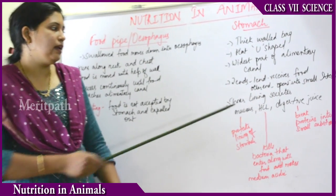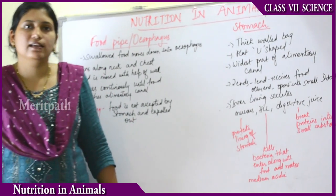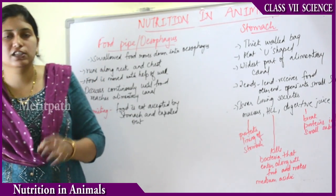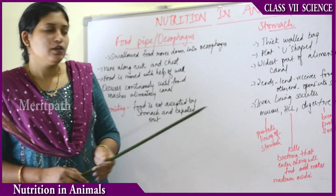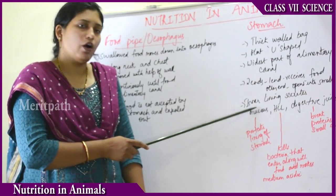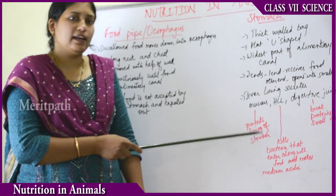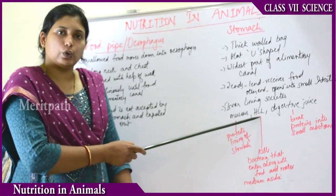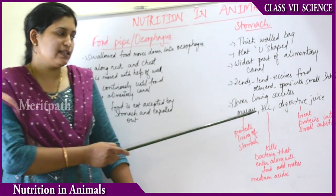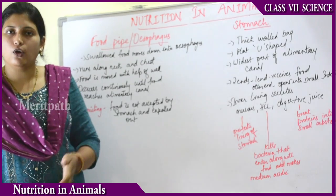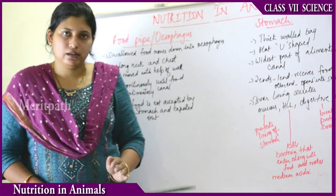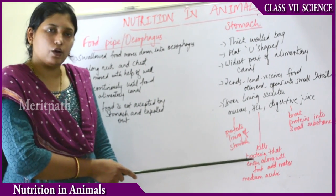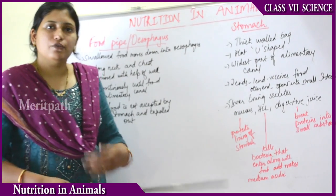The stomach has an inner lining that secretes mucus, making the surface wet and slippery. This mucus protects the lining of the stomach. The stomach also contains HCl or hydrochloric acid. This acid kills the bacteria that enter along with the food and makes the medium of the stomach acidic.